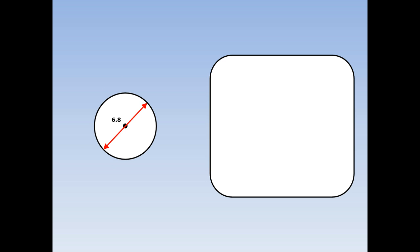Find the circumference of this circle with diameter 6.8. First of all, write out the formula: circumference equals 2 pi r. This means 2 times pi times the radius. Pi is 3.14, and half of 6.8 is 3.4. The final circumference of this circle is 21.352 centimetres.